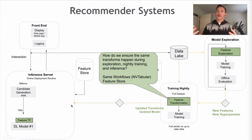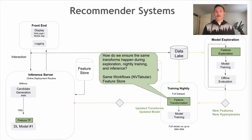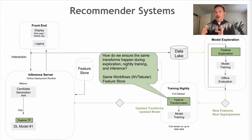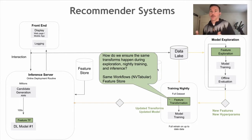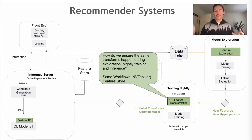You've also got data being transformed in three stages: exploration when figuring out what features to include, the nightly training job, and at inference time. When I first started in the field, the inference server might be in a completely different language or system, requiring a full rewrite with rigorous unit tests. Feature transforms can be wrong in very subtle ways that break your model or make performance much worse. So you really need to make sure everything is consistent.